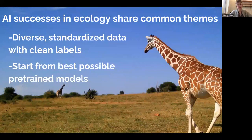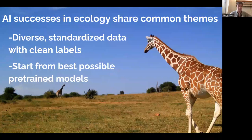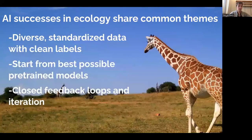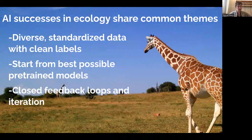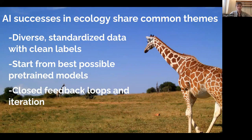Another key component is starting from the best possible pre-trained models — making use of modern state-of-the-art AI and the very expensive pre-training happening from large companies for different applications, and not reinventing the wheel. And perhaps most importantly, these AI successes are all based on closed feedback loops and iteration. The idea of training one dataset, training a model, and never retraining or getting feedback from users to figure out where it's failing — that feedback loop is pretty necessary to build a system that truly serves the needs of an interdisciplinary science and conservation technology community.